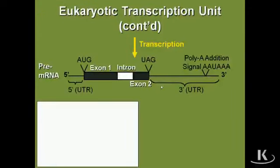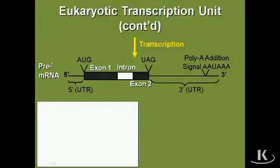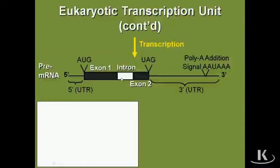Once we make a mature messenger RNA molecule, it goes from its 5 prime to its 3 prime end. There will be a 5 prime untranslated region, a 3 prime untranslated region, and in between will be some exon and intron sequences. Before the messenger RNA completely matures, we call it pre-mRNA. One of the tip-offs that it is pre-mRNA is that it still contains the intron sequence. Before this becomes fully mature messenger RNA, that intron is going to need to be removed.